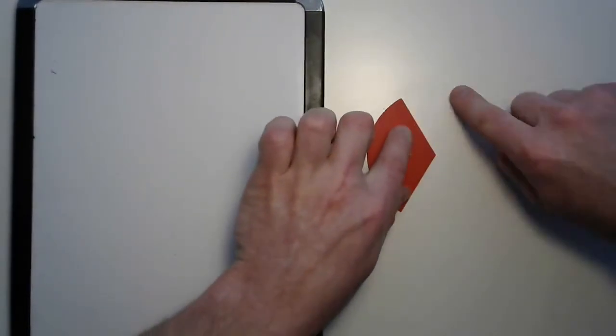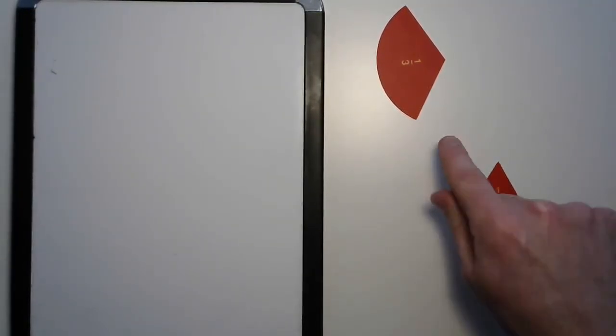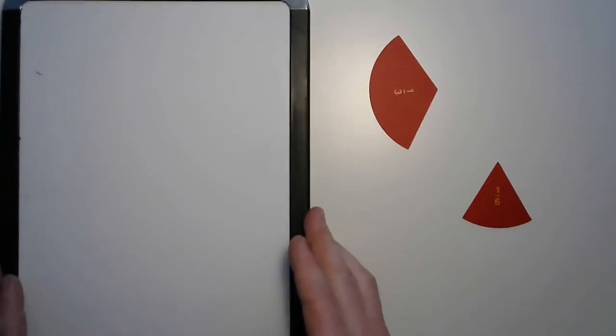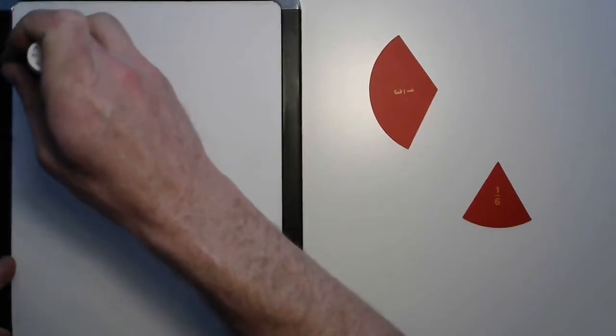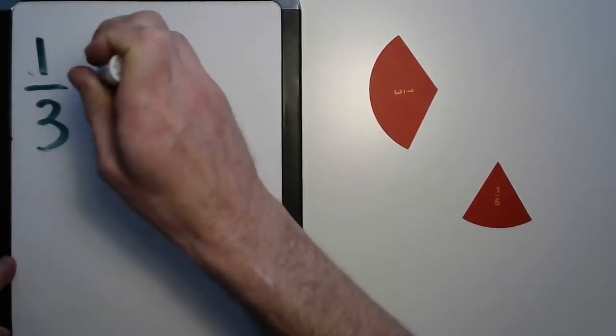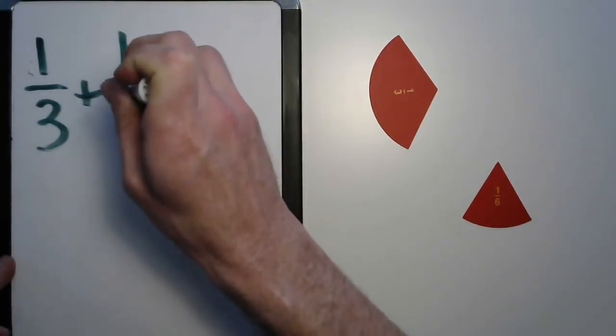You know, let's bring that third back out and let's give it something strange to add to it. How about a sixth? A third and a sixth? They're not even in the same family. Well, let's write it down anyway. One-third plus one-sixth.